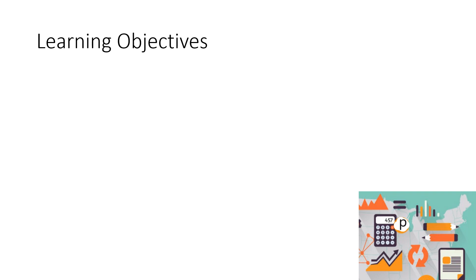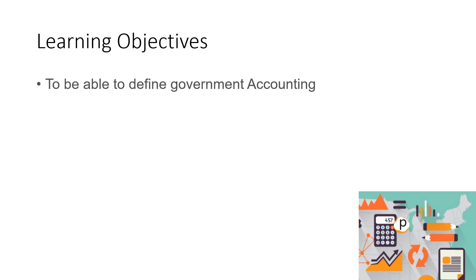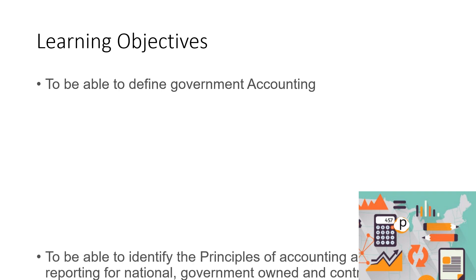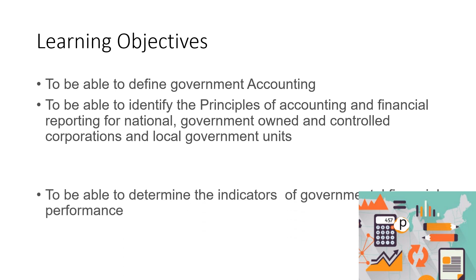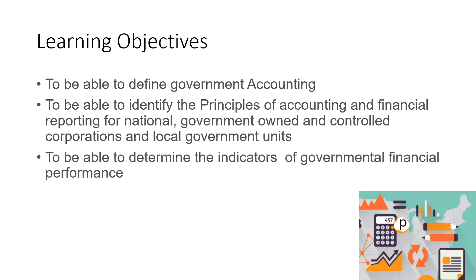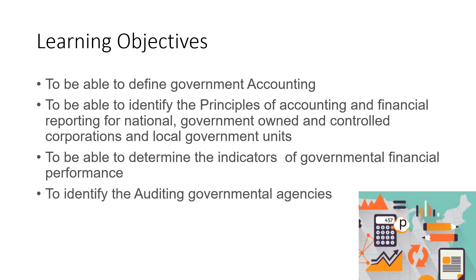Our learning objectives for this topic are: number one, to be able to define government accounting; number two, to be able to identify the principles of accounting and financial reporting for national government-owned and controlled corporations and local government units; number three, to be able to determine the indicators of government financial performance; and lastly, to be able to identify the account auditing governmental agency.